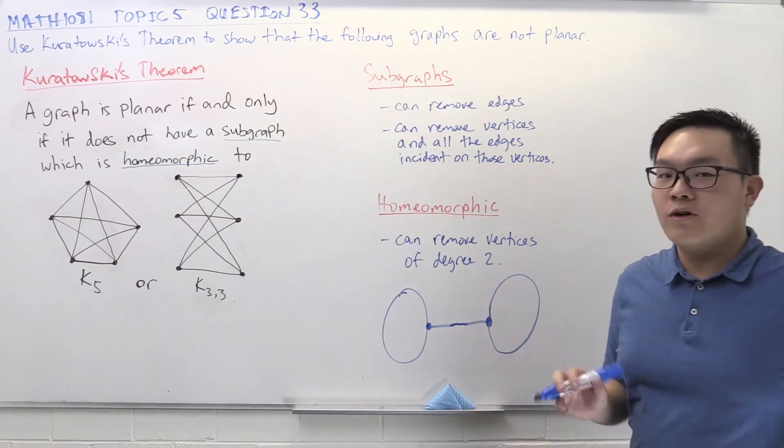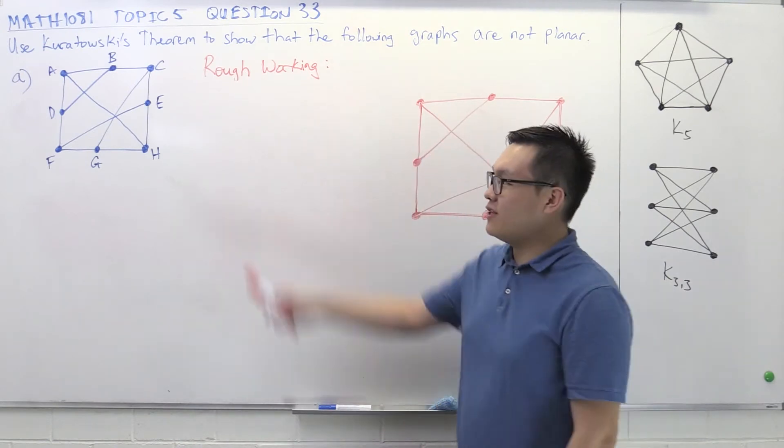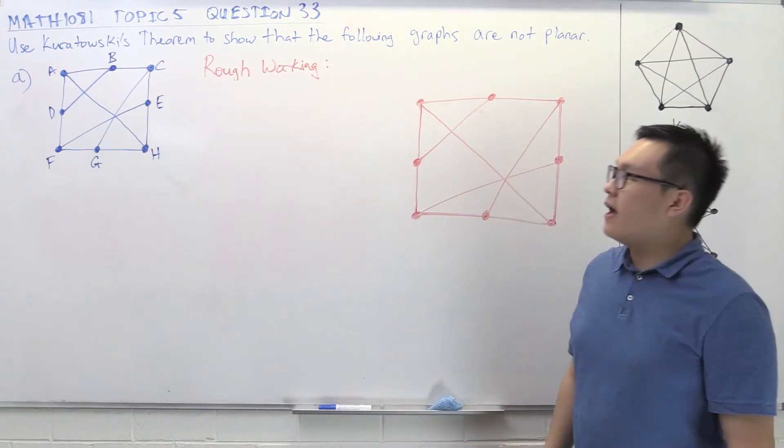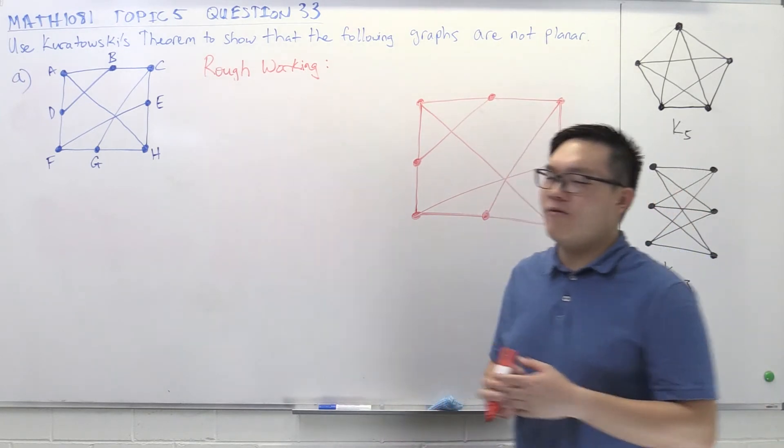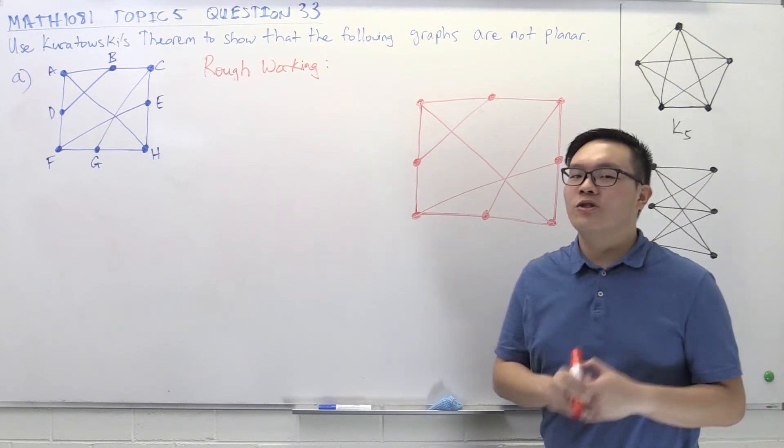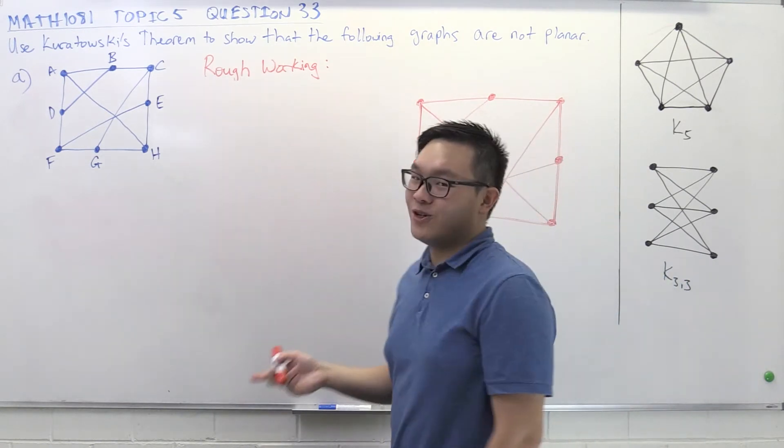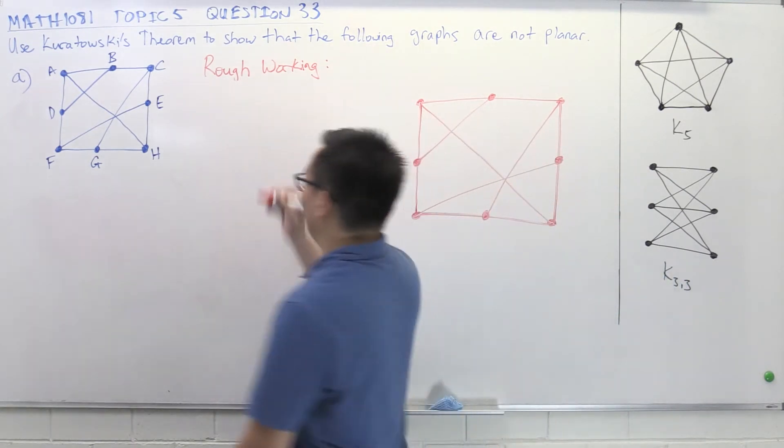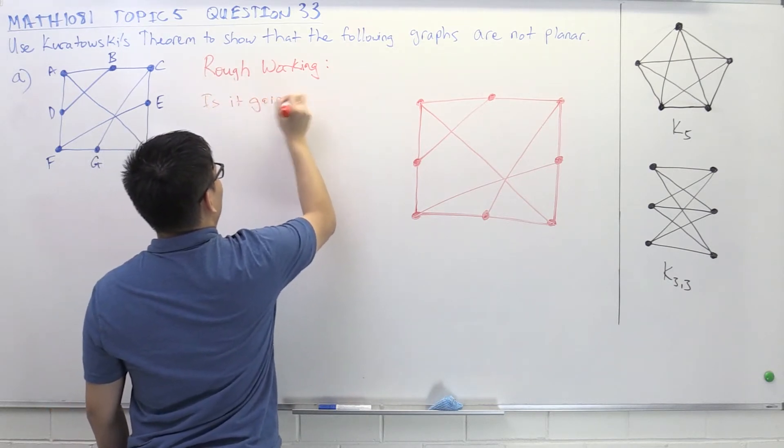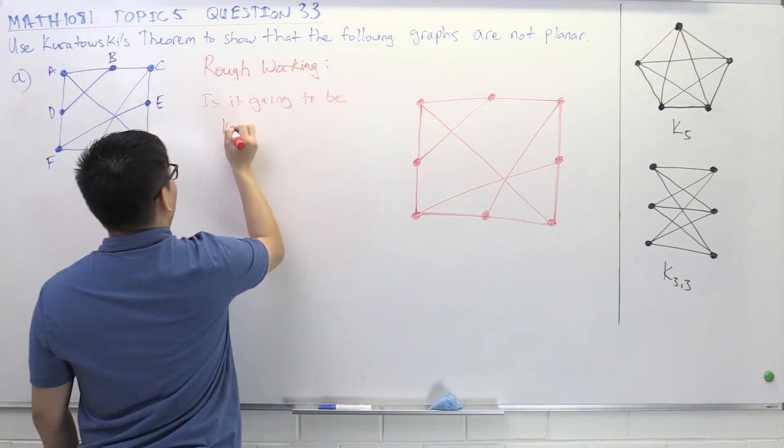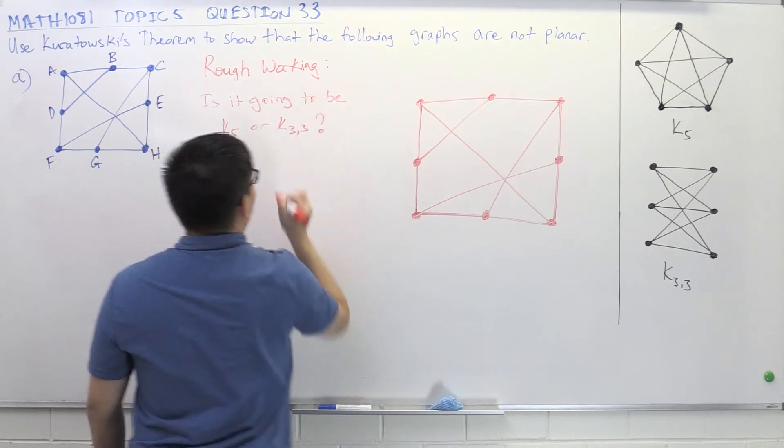So now that we understand what Kuratowski's theorem is telling us, let's have a look at an example. Part A is asking us to prove that this graph here is not planar. And before we write out our proof, I want to think of how this proof might pan out. So I'm going to do a bit of rough working. So when we want to use Kuratowski's theorem to prove that a graph isn't planar, the first question we need to ask ourselves is, is it going to end up being a K5 or a K33?